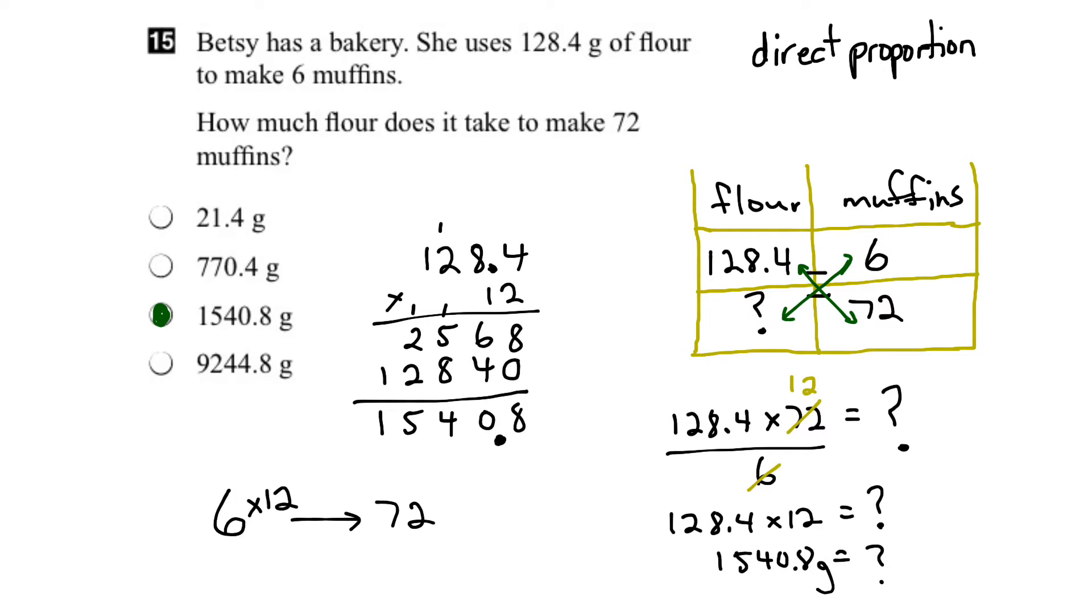So because this is direct proportion, then I want to make 12 times, or use 12 times the amount of flour. So as we saw here again, there's that where we got that expression here, 128.4 times 12 means we're taking 12 times the amount of flour. We worked that out to be this number, which indeed gives us the right answer.